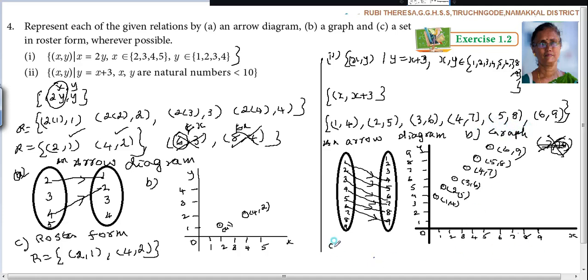Next one is C, roster form. R equals the same answer: 1, 4, 2, 5, 3, 6, 4, 7, 5, 8, 6, 9. You can do it a little better. Since the space is very little, I wrote it like this. In white sheet while you are writing, you will write neatly. Every one of you.